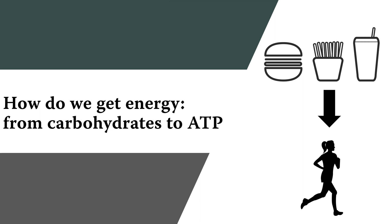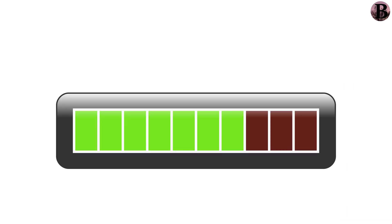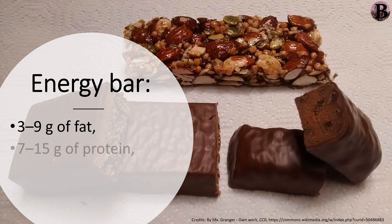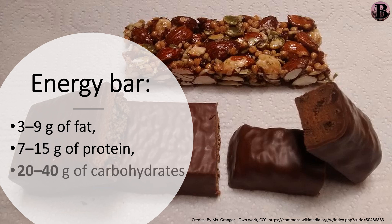How do we get energy from carbohydrates to ATP? Have you ever wondered why energy bars give you energy? Let's look at what's inside a typical energy bar. It weighs between 30 and 50 grams and contains 3 to 9 grams of fat, 7 to 15 grams of protein, and 20 to 40 grams of carbohydrates. Our bodies can use fats and proteins for energy, but carbohydrates are the main energy source for us.